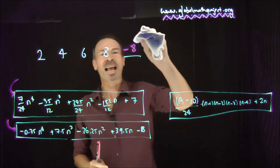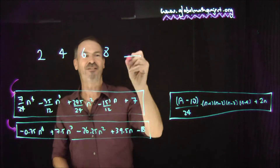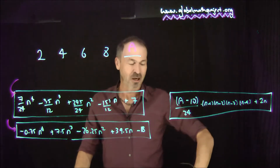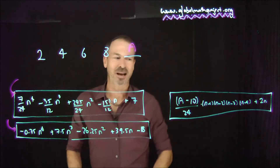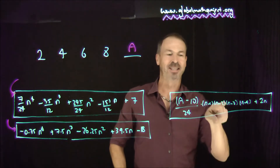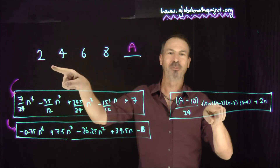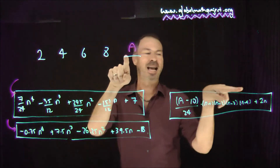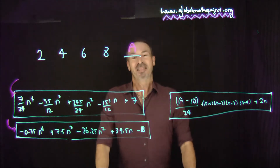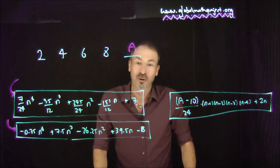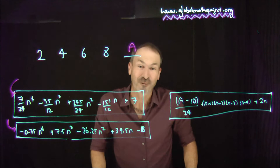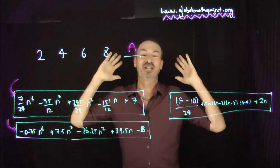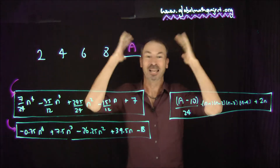The thing is, you can put any number you like for this final term in the sequence, because there's always going to be a formula that fits any number you like. There's a formula that fits this particular sequence for n = 1, 2, 3, 4, 5, giving outputs 2, 4, 6, 8, a — for any number a. You cannot trust patterns. You can write down a formula for any set of numbers you like, which is just wonderful and amazing and a little bit mind-blowing.